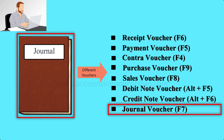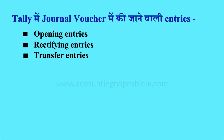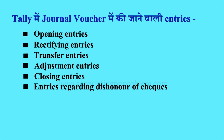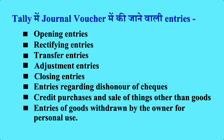What are the entries recorded in the journal voucher? In the journal voucher, we record entries such as the sale of things other than goods, and entries of goods withdrawn by the owner for personal use, etc. In simple language, the transactions we have covered in this video series that were not recorded in the other 7 vouchers — those are recorded in the journal voucher.